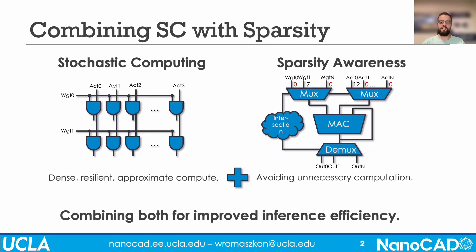SACHA is the first work to combine two techniques used to accelerate neural network inference: stochastic computing, an approximate streaming number representation, and sparsity awareness to skip ineffectual computation. SACHA addresses a series of obstacles to be able to combine the benefits of both approaches.